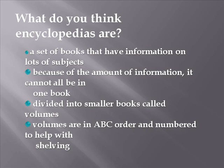What do you think encyclopedias are? They are a set of books that have information on lots of subjects. Because of the amount of information, they all can't be in one book. They are divided into smaller books called volumes. The volumes are in alphabetical order and they are numbered to help with the shelving.